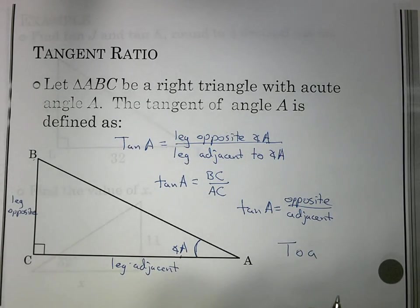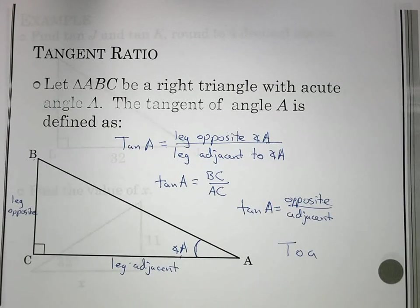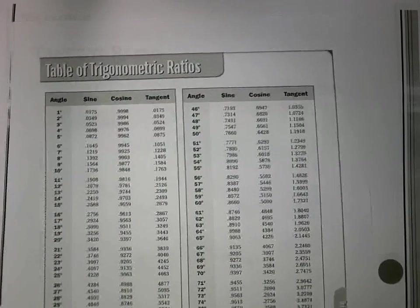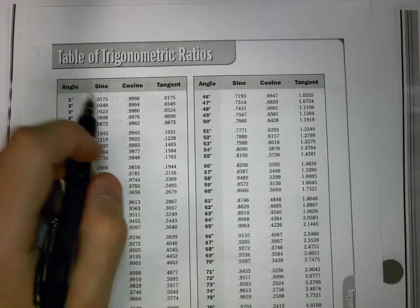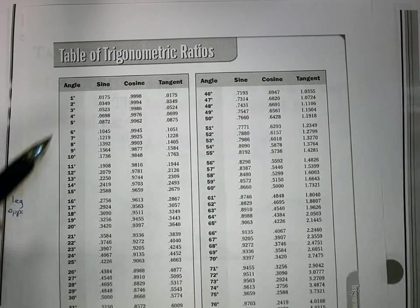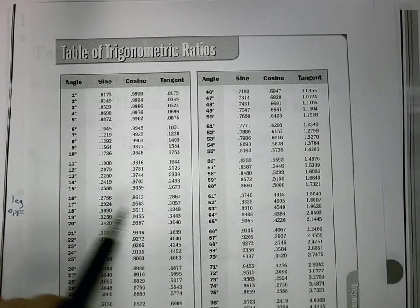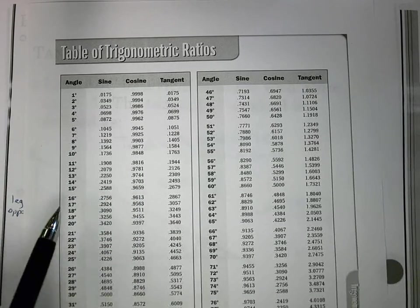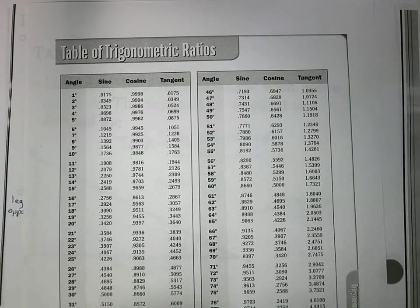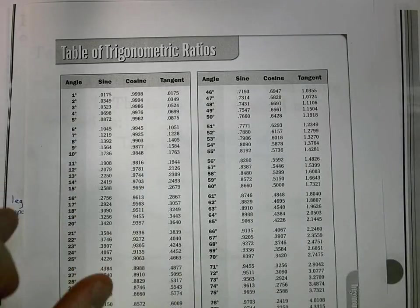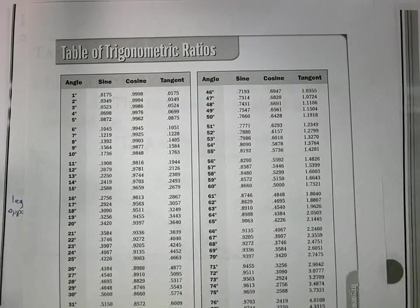This is where we're also going to have the use of a trig table. These trig tables have sine, cosine, and tangent, which we're going to talk about again in the later sections. Tangent is going to give us the values for the angle that we have. We're going to use this in a little bit when we start looking at the problems we're solving. If you don't have a calculator, this is what you're going to need to use.